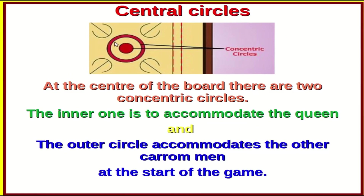At the center of the board there are two concentric circles. The inner one accommodates the Queen, which is placed covering the central red circle at the start of the game. The outer central circle accommodates the other carom men at the start of the game in a particular configuration.